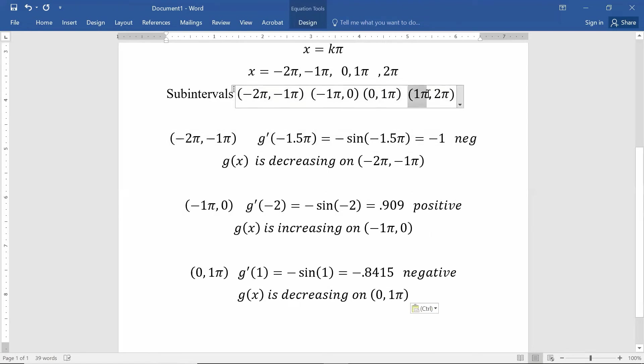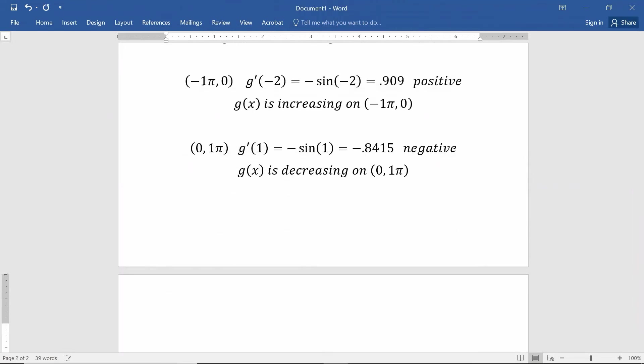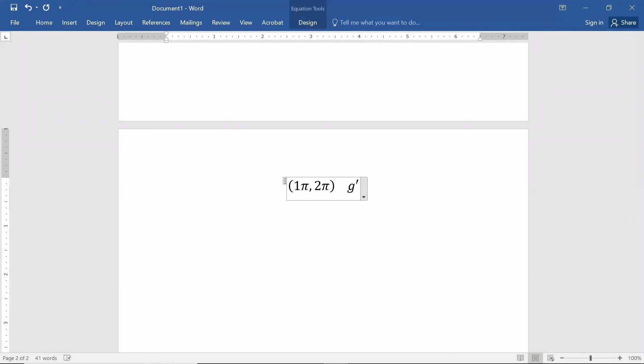Lastly, the last subinterval is from 1π to 2π. I might run out of room here. That's okay. 1π is about 3.14. 2π is about 6.28. So if I plug in, for instance, a 5, that's between 1π and 2π. Let's go ahead and do that. Negative sine of 5.